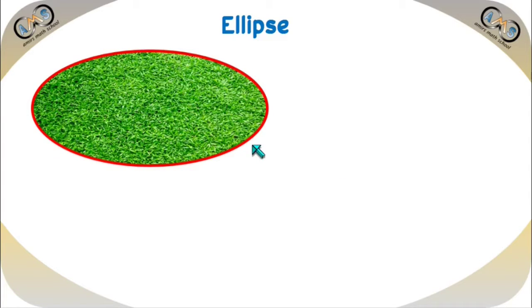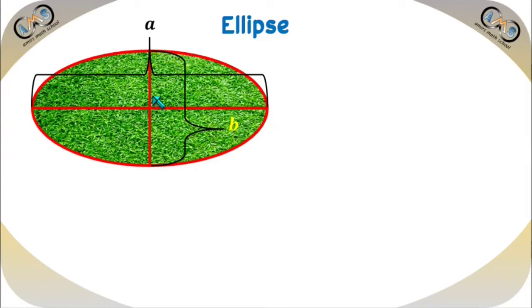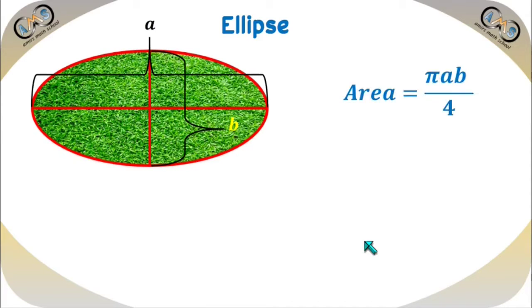Let's see the formula for the area of an ellipse. This type of shape is not exactly a circle — this is an ellipse, where this length is A and this length is B. These two lengths are not equal. In the case of a circle, A and B are equal, but in the case of an ellipse, A and B are not equal. The formula for the area of an ellipse is: area equals pi times A times B divided by 4, and we know the value of pi is approximately 3.1416.